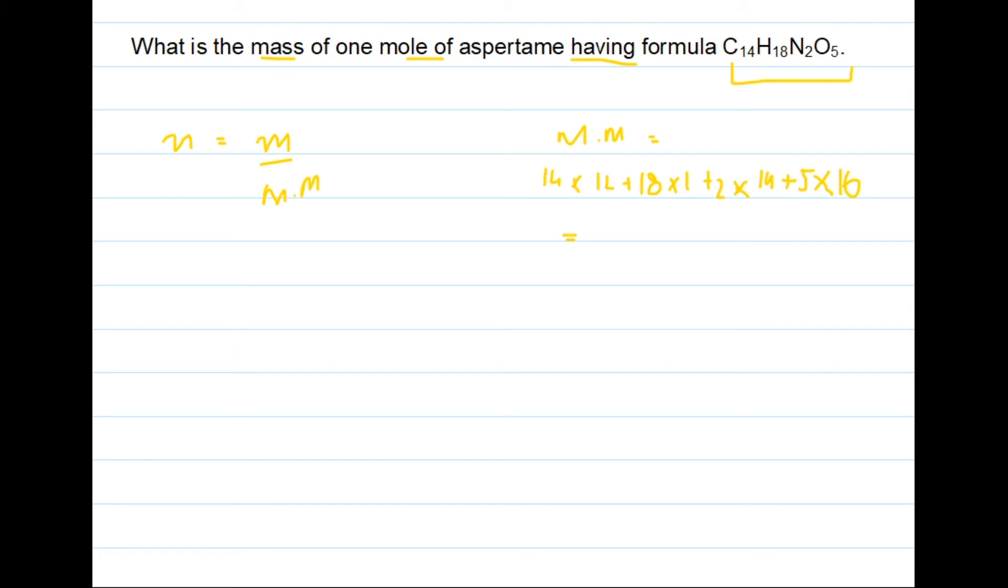Now after multiplying and adding these values, we will get 294 grams per mole. This is the molecular mass for aspartame.